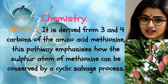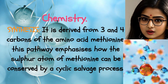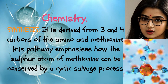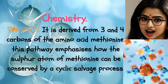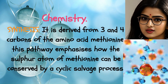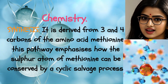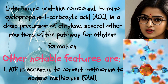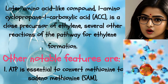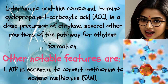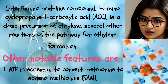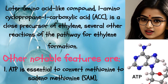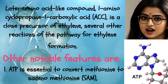Chemistry - Synthesis: Ethylene is derived from carbons 3 and 4 of the amino acid methionine. This pathway emphasizes how the sulfur atom of methionine can be conserved by a cyclic salvage process. The amino acid-like compound 1-aminocyclopropane-1-carboxylic acid (ACC) is a close precursor of ethylene. Several other reaction pathways for ethylene formation are also known.